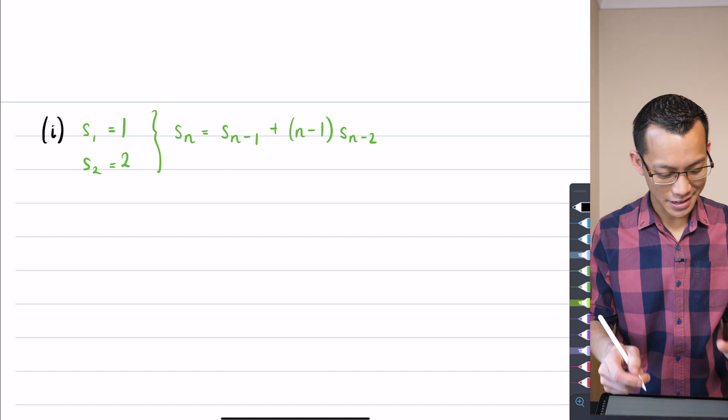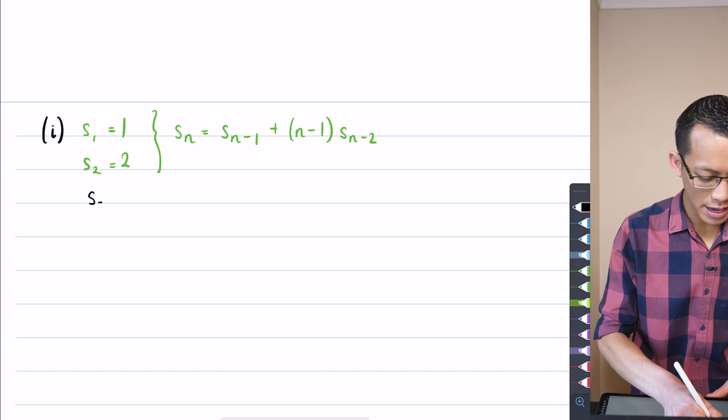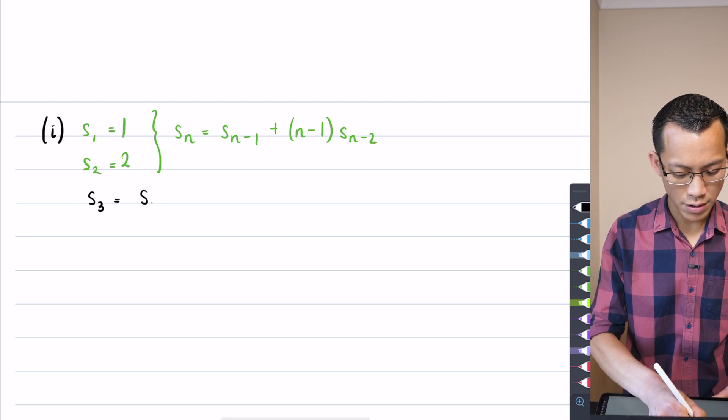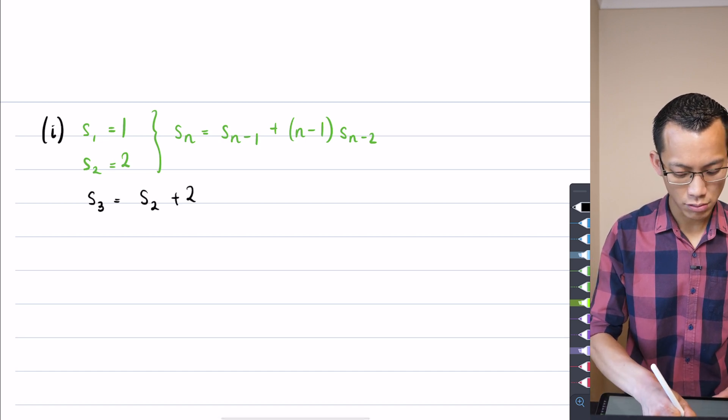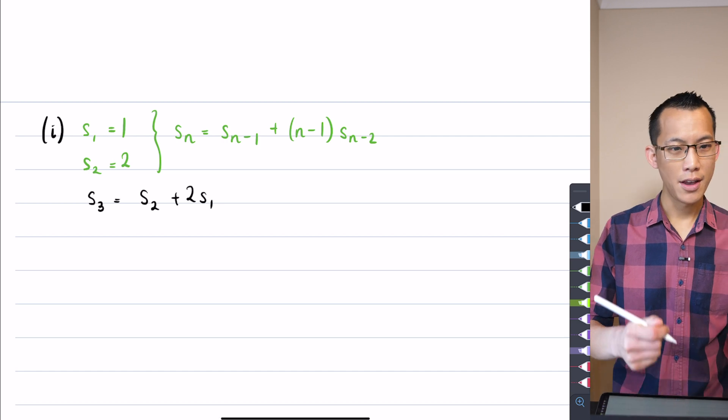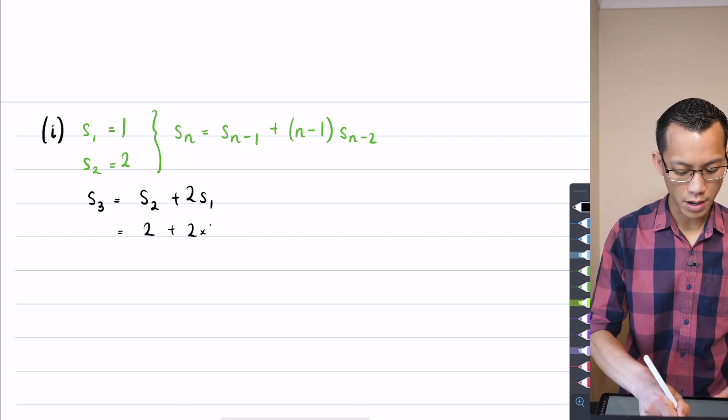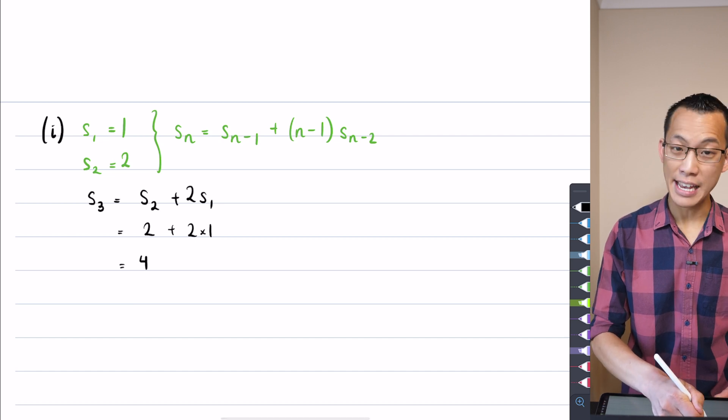So for part one, it's fairly straightforward. We want to say, well, S_3 is going to depend on S_2 and S_1, so it's going to be the previous term plus two lots of the term before that. We know that the previous term was two, the first term was one, so we just get S_3 being equal to four.